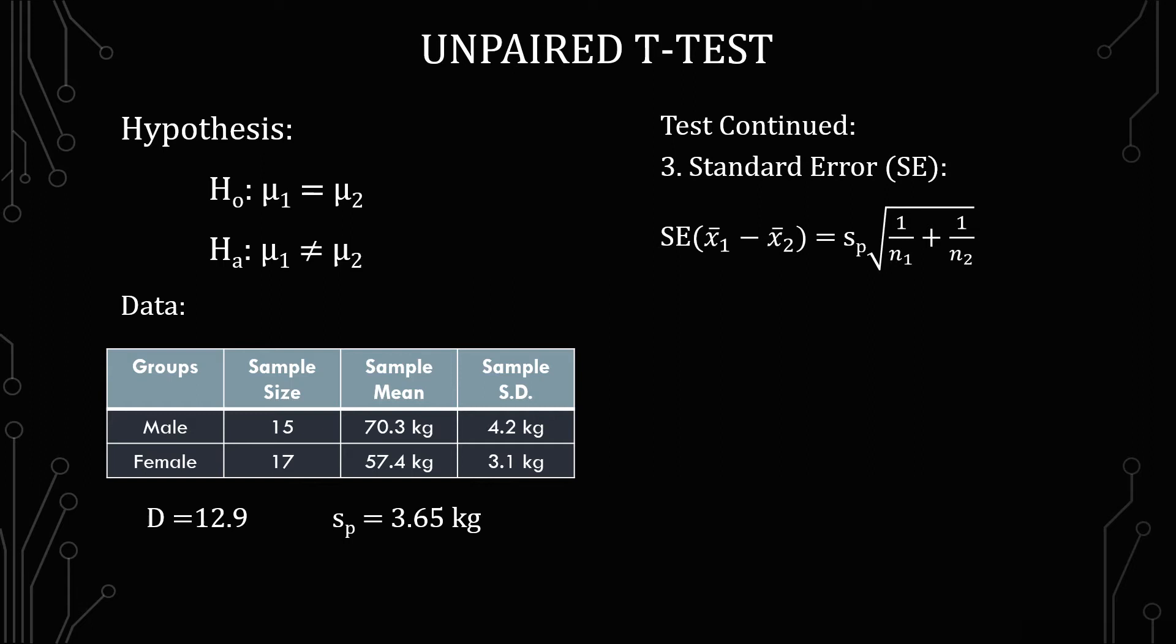The next part we have to calculate is the standard error and the standard error is the standard deviation of the pooled sample times the square root of 1 over the sample size of group 1 plus 1 over the sample size of group 2.